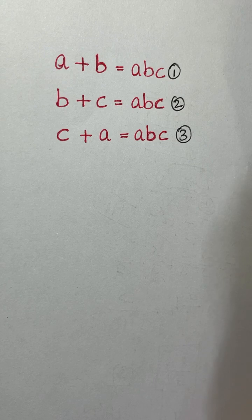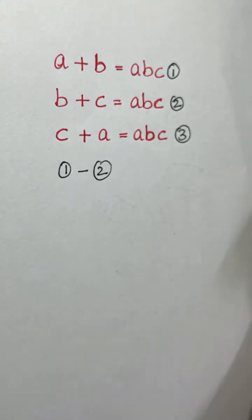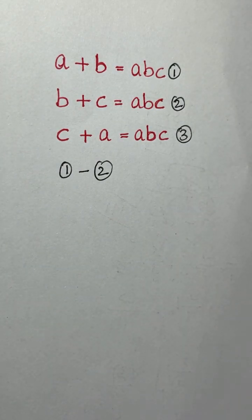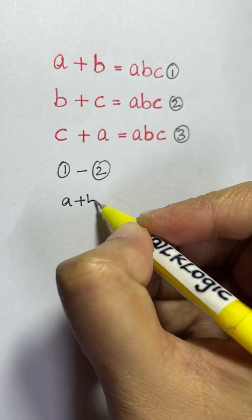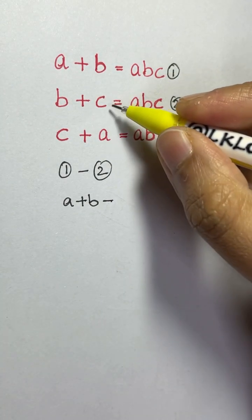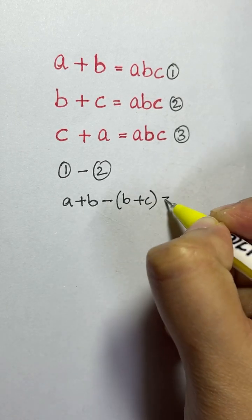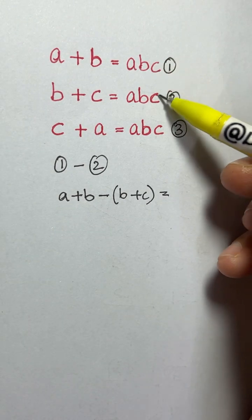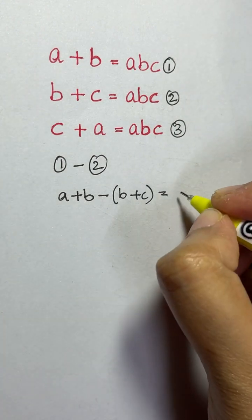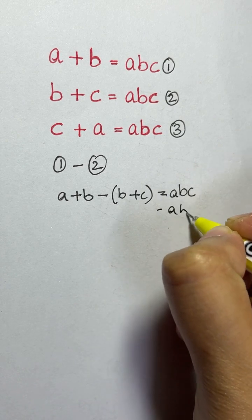Now, how do we solve it? First, we are going to subtract equation two from equation one. When we subtract, we have a plus b minus b plus c on the left, which is equal to abc minus abc on the right hand side.